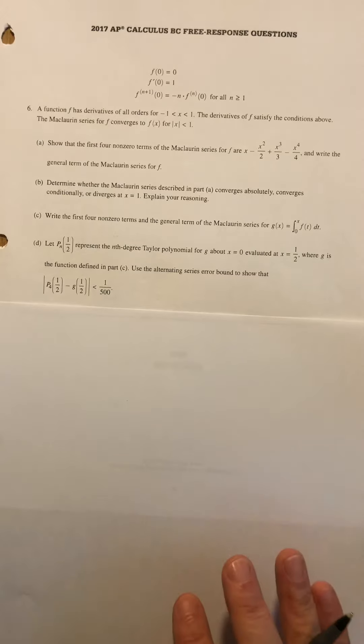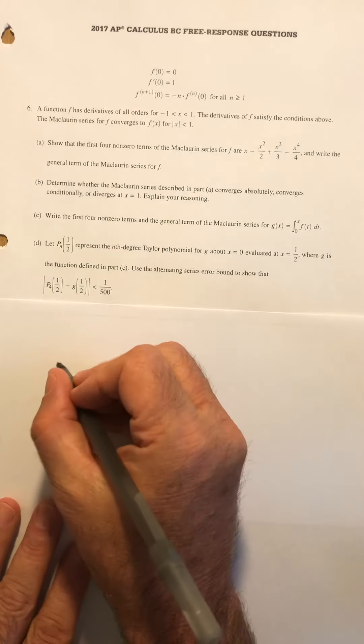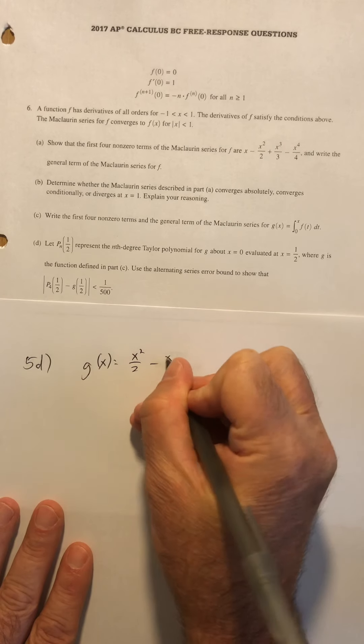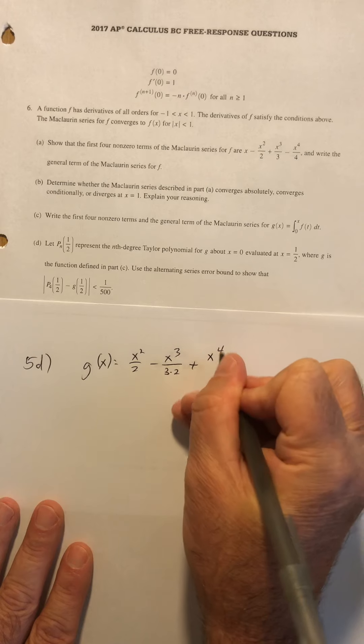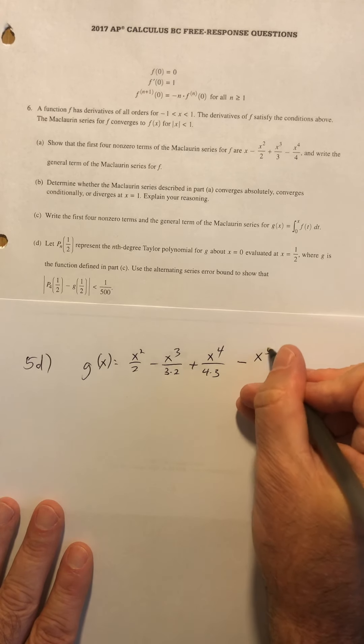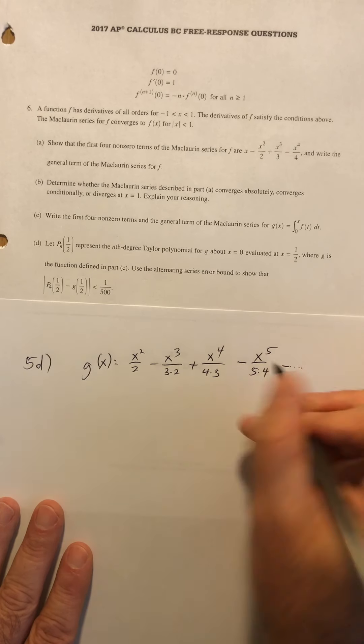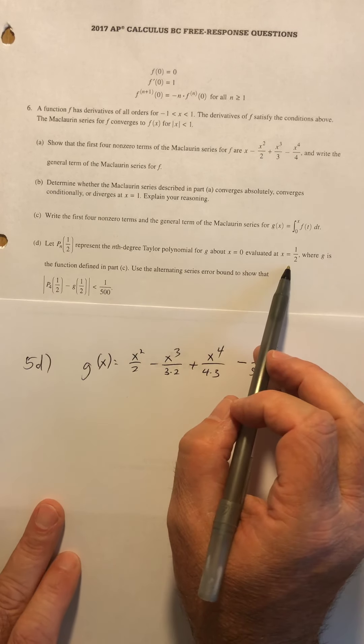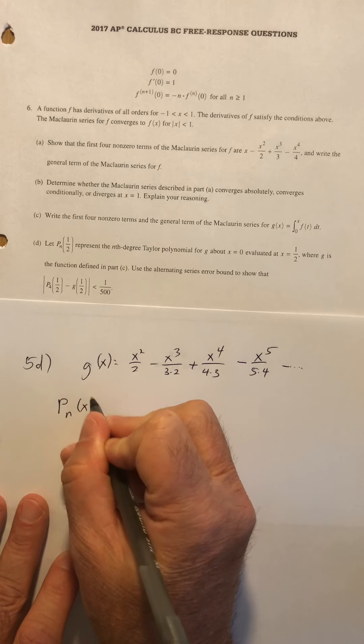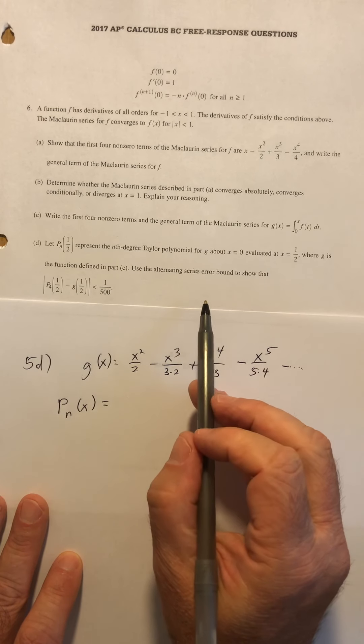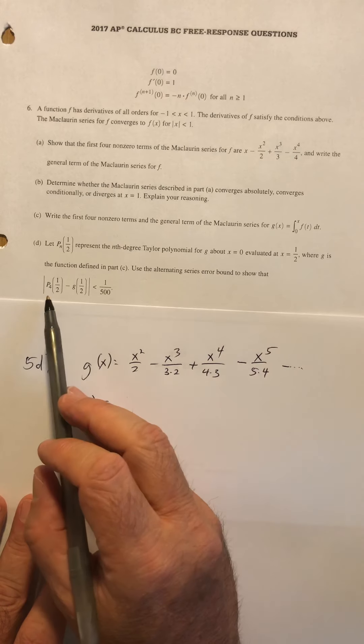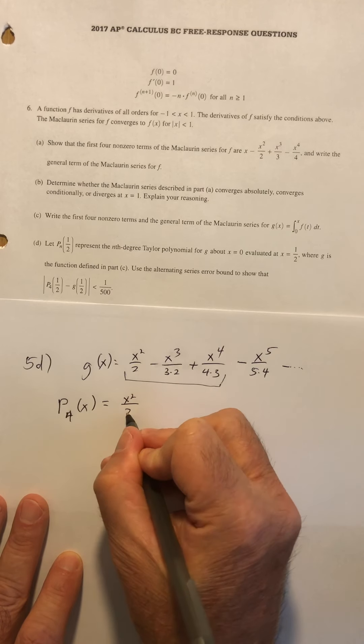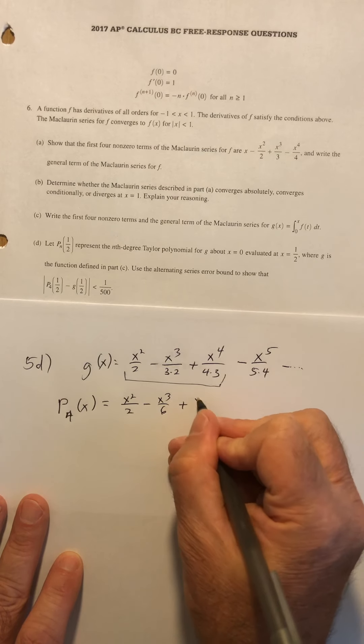Part D said, let's take that G function that we just had. I'm going to write it again. 5D. G of x equals x squared over two minus x to the third over three times two plus x to the fourth over four times three minus x to the fifth over five times four. So let's find the nth degree Taylor polynomial evaluated at one half. So let's find the polynomial first. That's simply just going to be this. And P4 is relevant for this question. So I'm basically just going to go out to these four terms. So it would be x squared, these three terms, x to the third over six and x to the fourth over twelve.